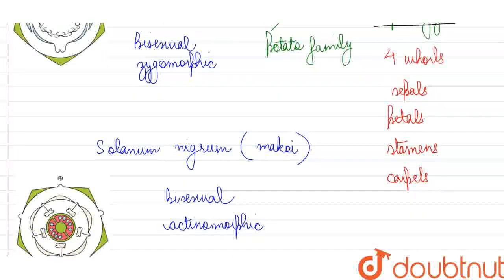In our pea flower, although both of the flowers are bisexual, that is the common thing among them. But in the pea flower, we are finding symmetry to be zygomorphic. That is, bilateral type of symmetry will be seen here. But in the potato family, we are finding actinomorphic flowers. That is, they will show radial symmetry.